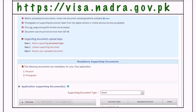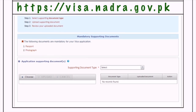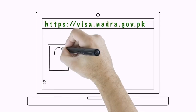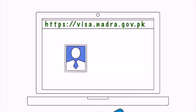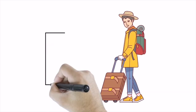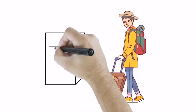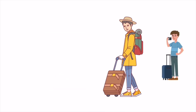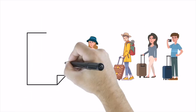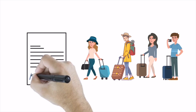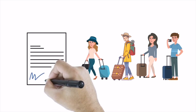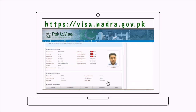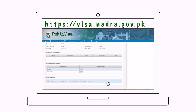In the document section, upload the required documents: a photograph and a copy of your passport. In addition to these, as an individual tourist you have to submit either a letter by your sponsor or hotel booking details. In case of a group, a copy of an invitation letter from a licensed tour operator is required.